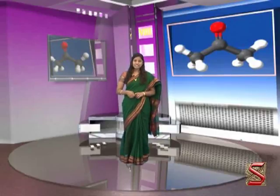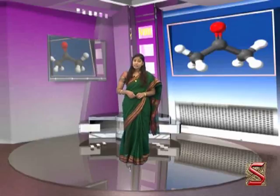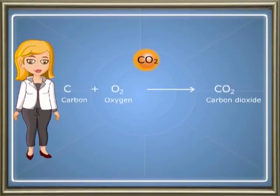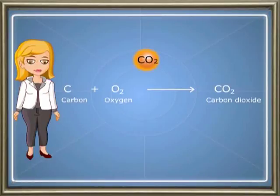We have learnt that elements are represented by symbols and molecules are represented by formulae. In the same way, chemical reactions are also represented by using the formulae of substances involved in a reaction. This is known as a chemical equation. For example, the reaction between carbon and oxygen gives carbon dioxide. In this equation, the positive sign represents reaction and the arrow mark is read as 'gives rise to,' indicating the direction in which the reaction occurs.